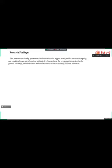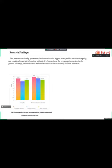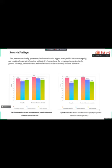First, rumor correction by governments, businesses, and tourists triggers positive emotion and cognition. Among these, the government correction has the greatest advantage, and the business and tourist corrections have different influences.